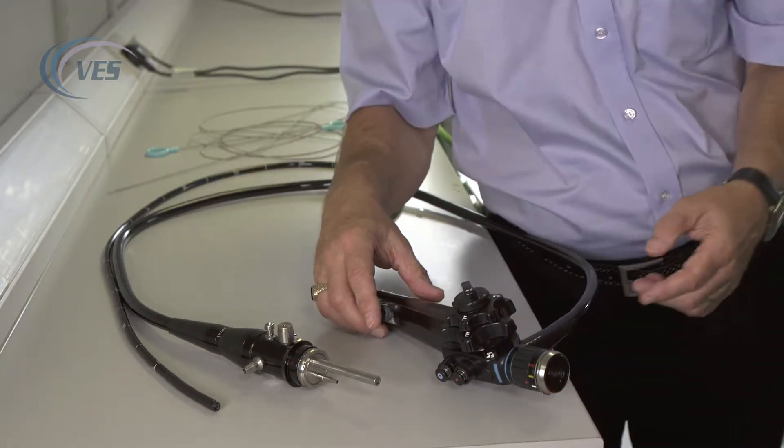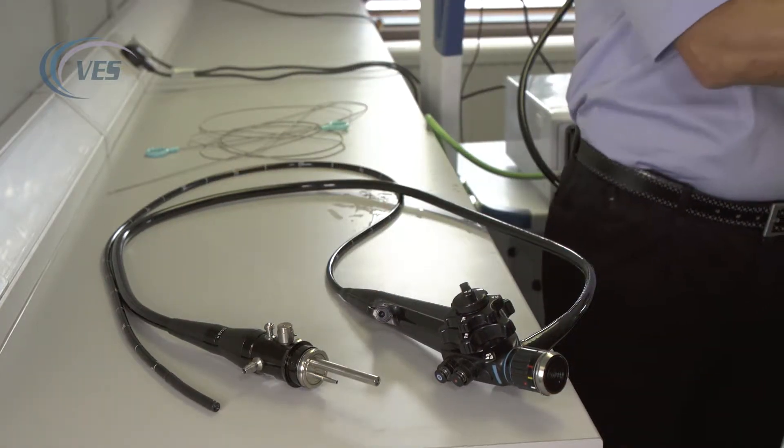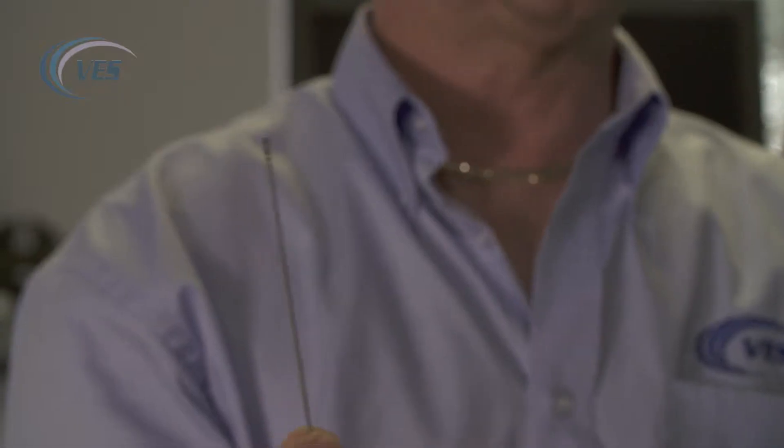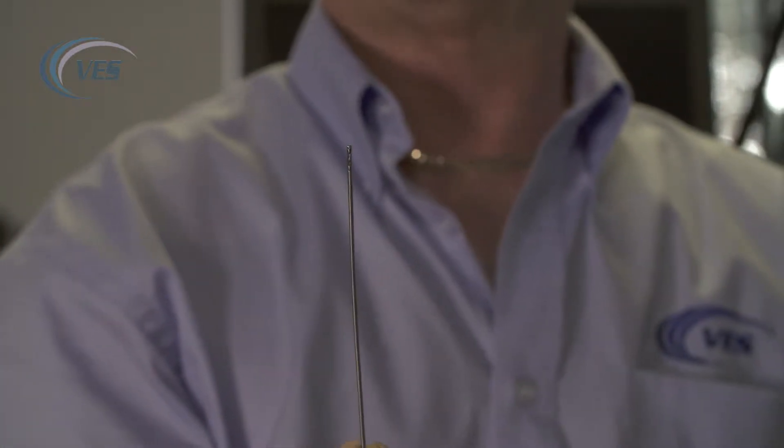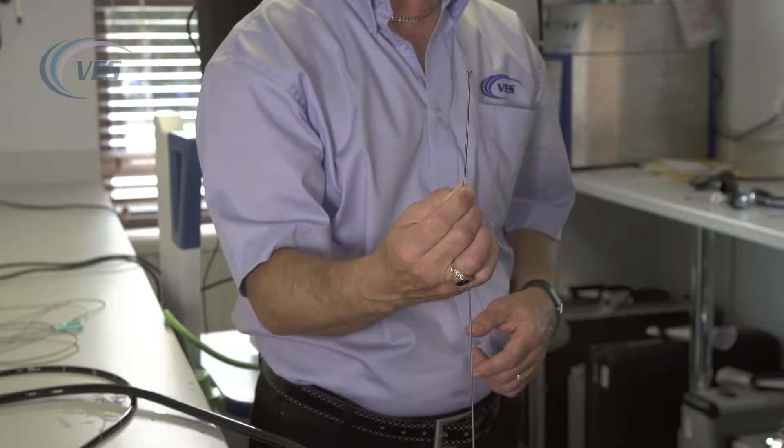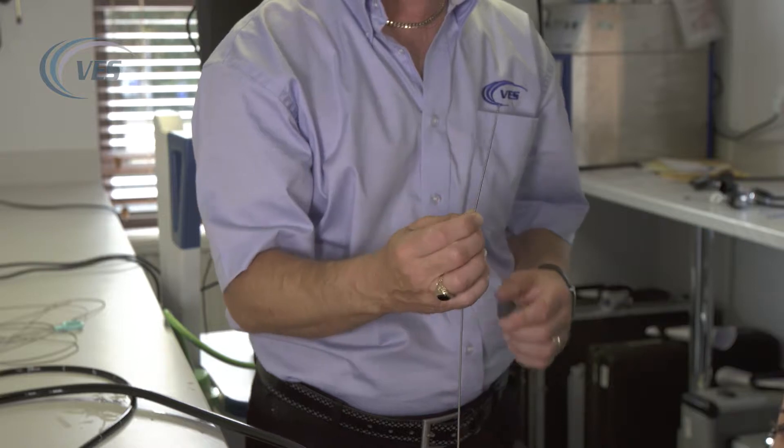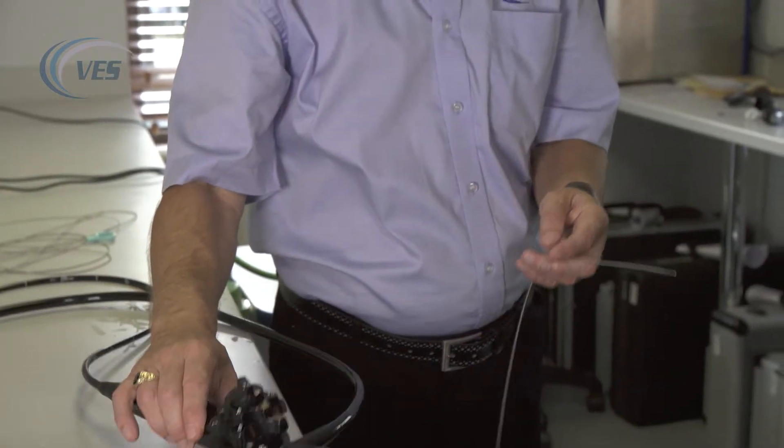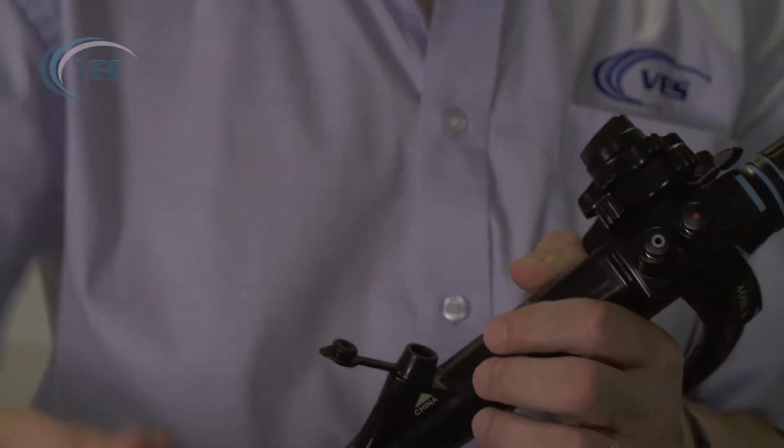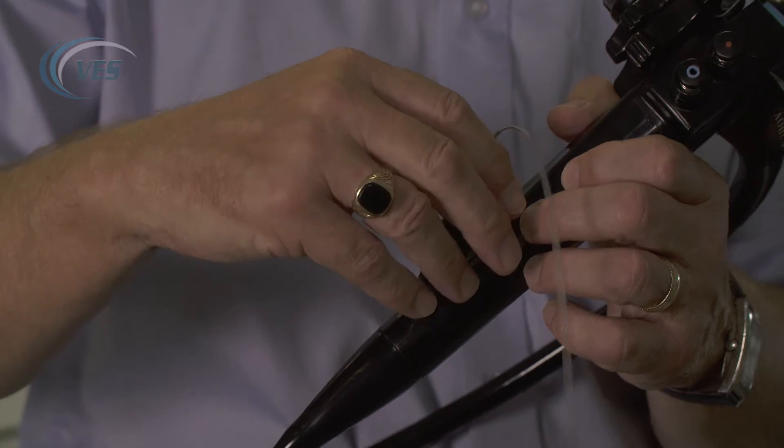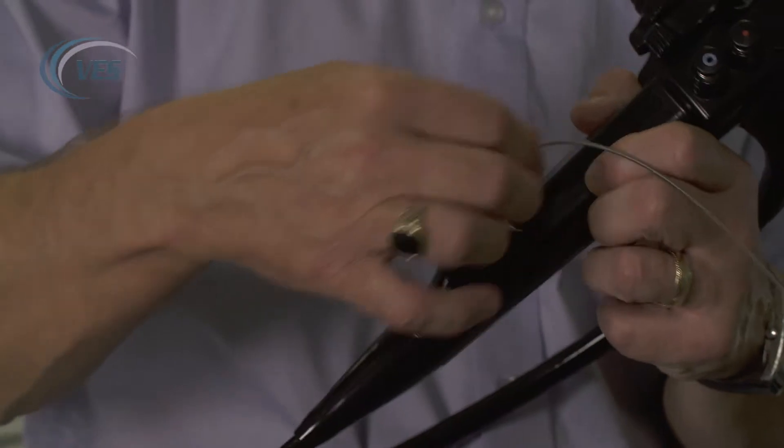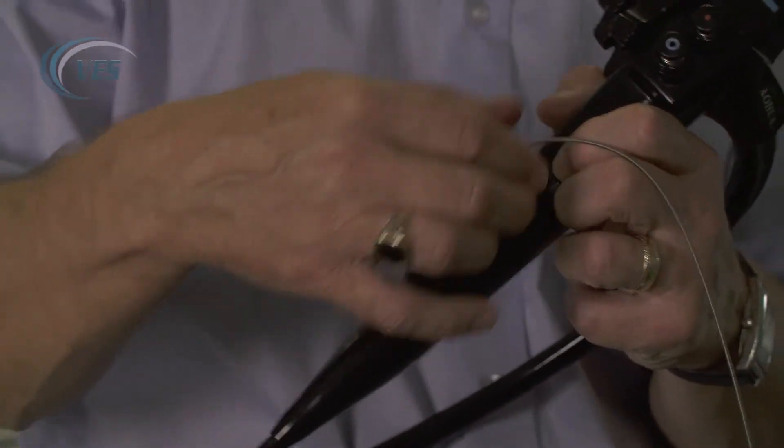It's important to make sure that the biopsy forceps prior to being introduced through the biopsy port are closed and not open. If they are open and introduced into the biopsy channel, you're going to cause a lot of damage. To feed through, take the port off the biopsy cap and just feed that through. With short movements, feed your instrument or cleaning or cytology brush through.